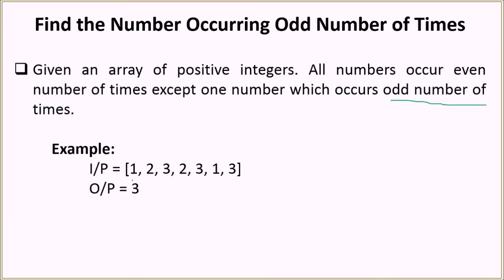For example, we have this array. Let's see, one is here and here, so it's occurring two times. That's even number of times. Then we see two, so two is occurring again twice. So that is even number of times. But three is occurring three times. So that is, it's occurring odd number of times. So basically you have to output three.